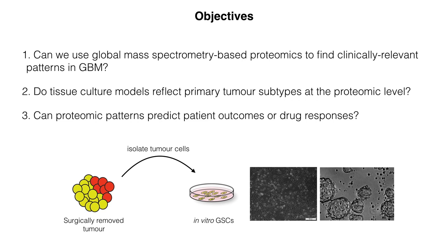We also studied glioma stem cell-like cells, which are grown in a dish in the presence of growth factors. These cells are thought to initiate the tumor and cause recurrence, so they're called tumor-initiating cells. They have properties of stem cells — they can give rise to the tumor again and self-renew. We grow these as monolayer or as tumor spheres. Tumor spheres grown in suspension give a more heterogeneous phenotype, whereas adherent cells are more uniform.